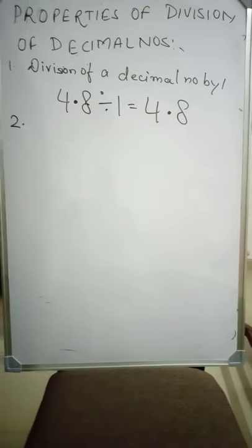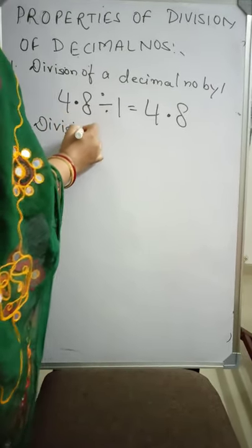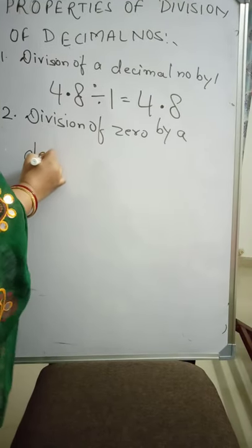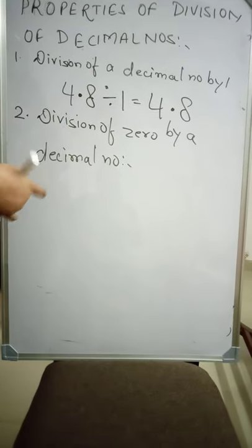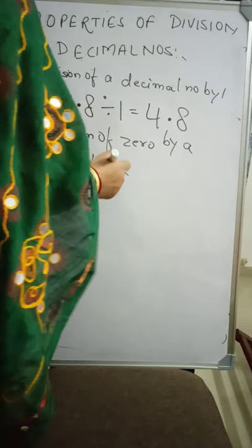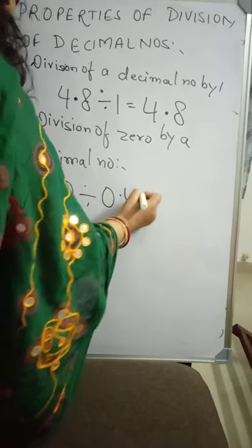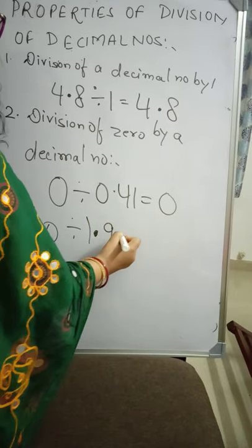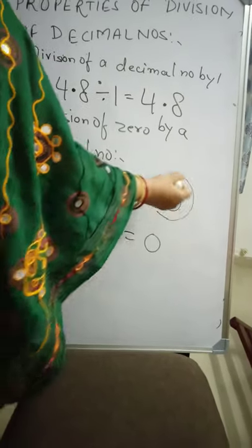Now come to the second property: Division of 0 by a decimal number. Whenever 0 is divided by a decimal number, the quotient is 0. For example, 0 divided by 0.41 — the answer is 0. 0 divided by 1.9 — the answer is also 0.